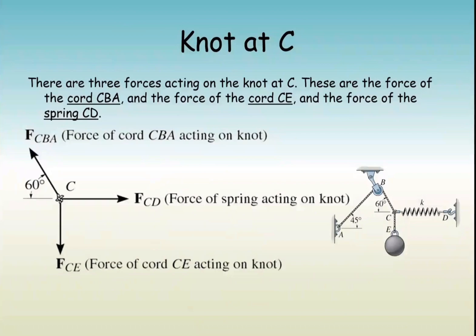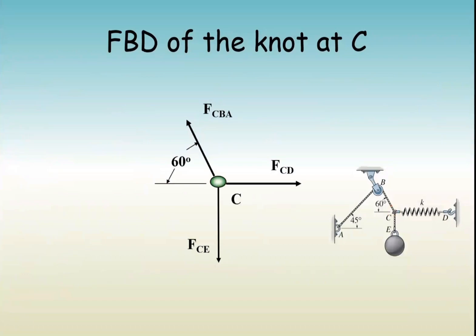Next, we need to draw the free body diagram of the knot, this joint here. I'll draw a circle on this joint. This is the free body diagram of the knot. I've got this force acting towards it—the spring force. You've got this force from the pulley and this force from the sphere.